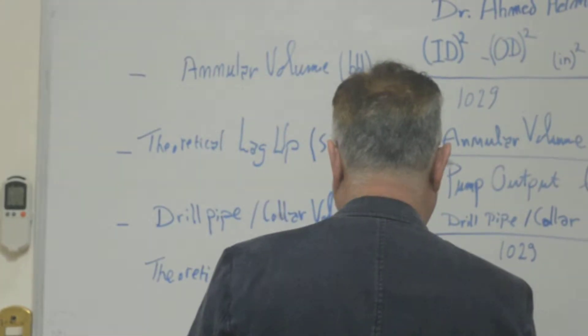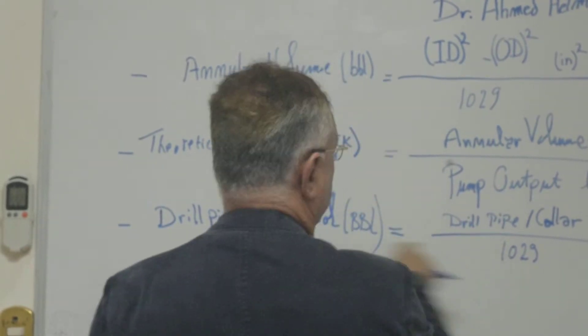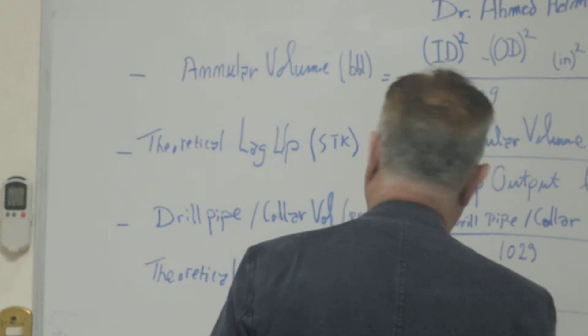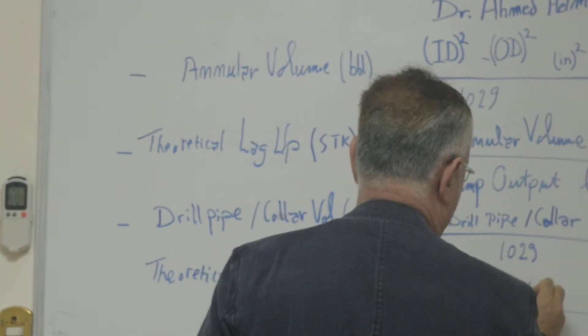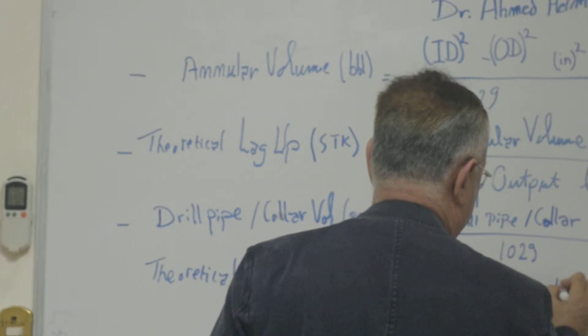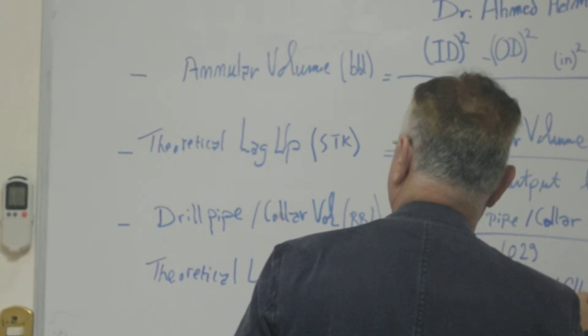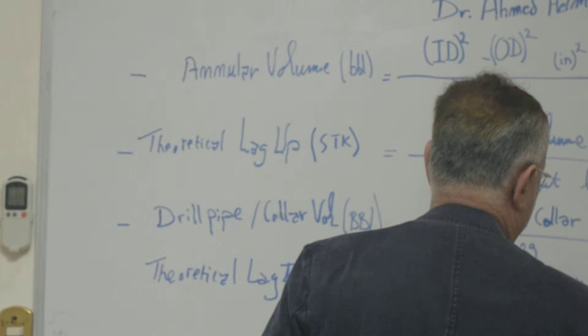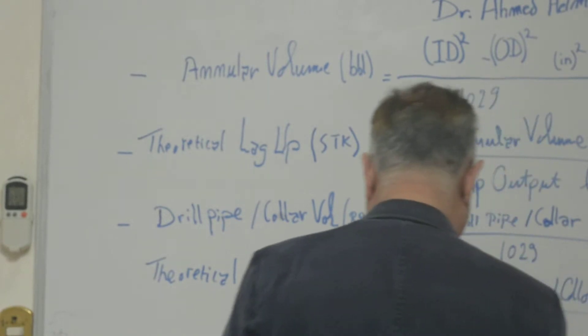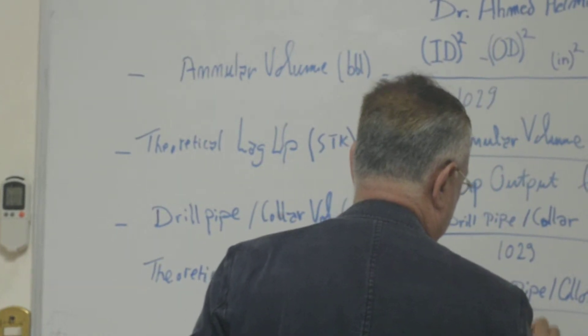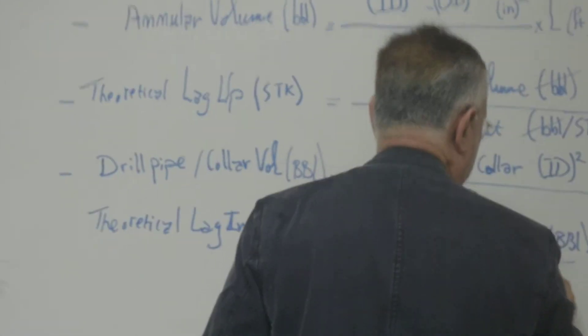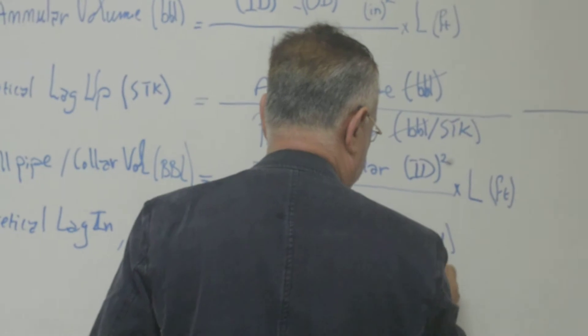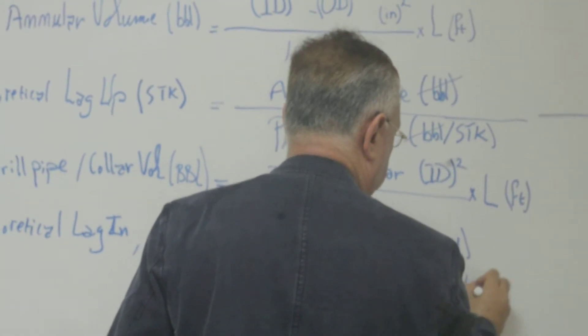We will divide this volume - drill pipe and collar in barrels - by the pump output from the data sheet in barrels per stroke.